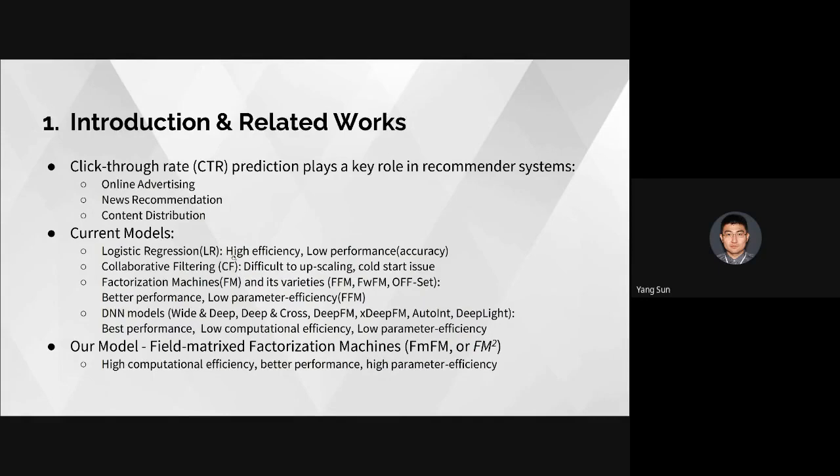The last category is DNN models, like Wide and Deep, Deep and Cross, DeepFM, xDeepFM, and DeepLight. These models achieve the best performance, but they have too many parameters, risk overfitting during training, and have low inference speed. They can typically only be used at the final re-ranking stage.